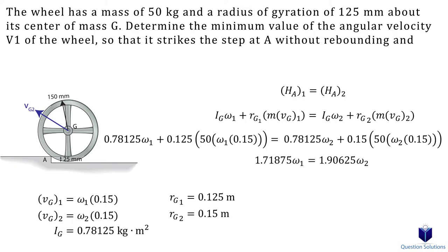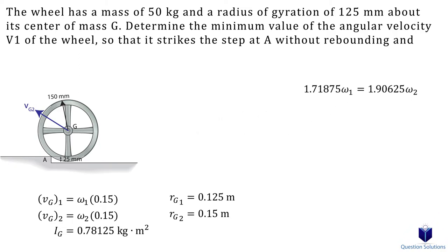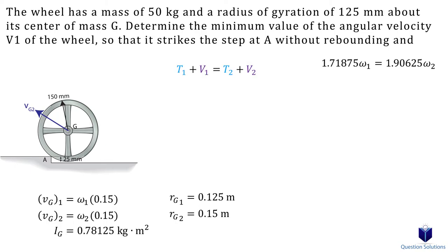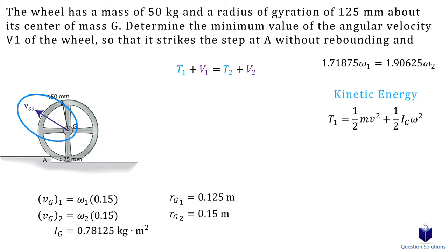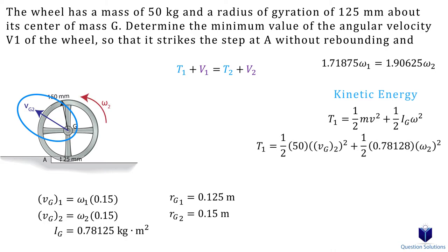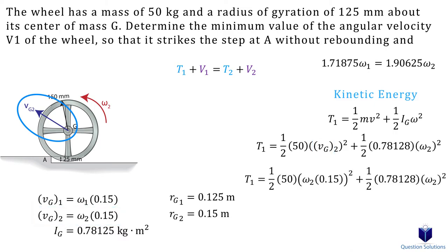Now we have one equation with two unknowns, so we need one more equation. For that, we're going to use the conservation of energy, doing each section separately. For kinetic energy, the initial kinetic energy is when the wheel is about to be on the step — the velocity vector is at an angle, so we use velocity 2 and the second angular velocity. We can replace the velocity with the expression we found and simplify.